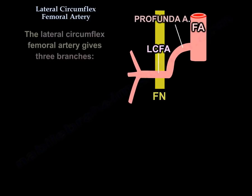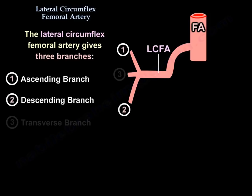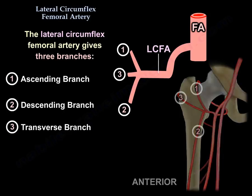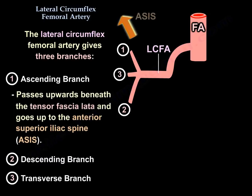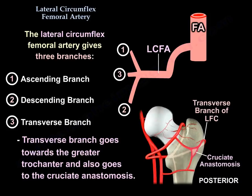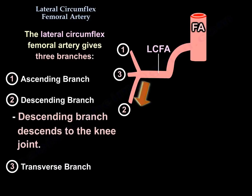The lateral circumflex femoral artery gives three branches: the ascending, the descending, and the transverse. The ascending branch goes up to the anterior superior iliac spine, the transverse branch goes to the cruciate anastomosis, and the descending branch descends to the knee joint.